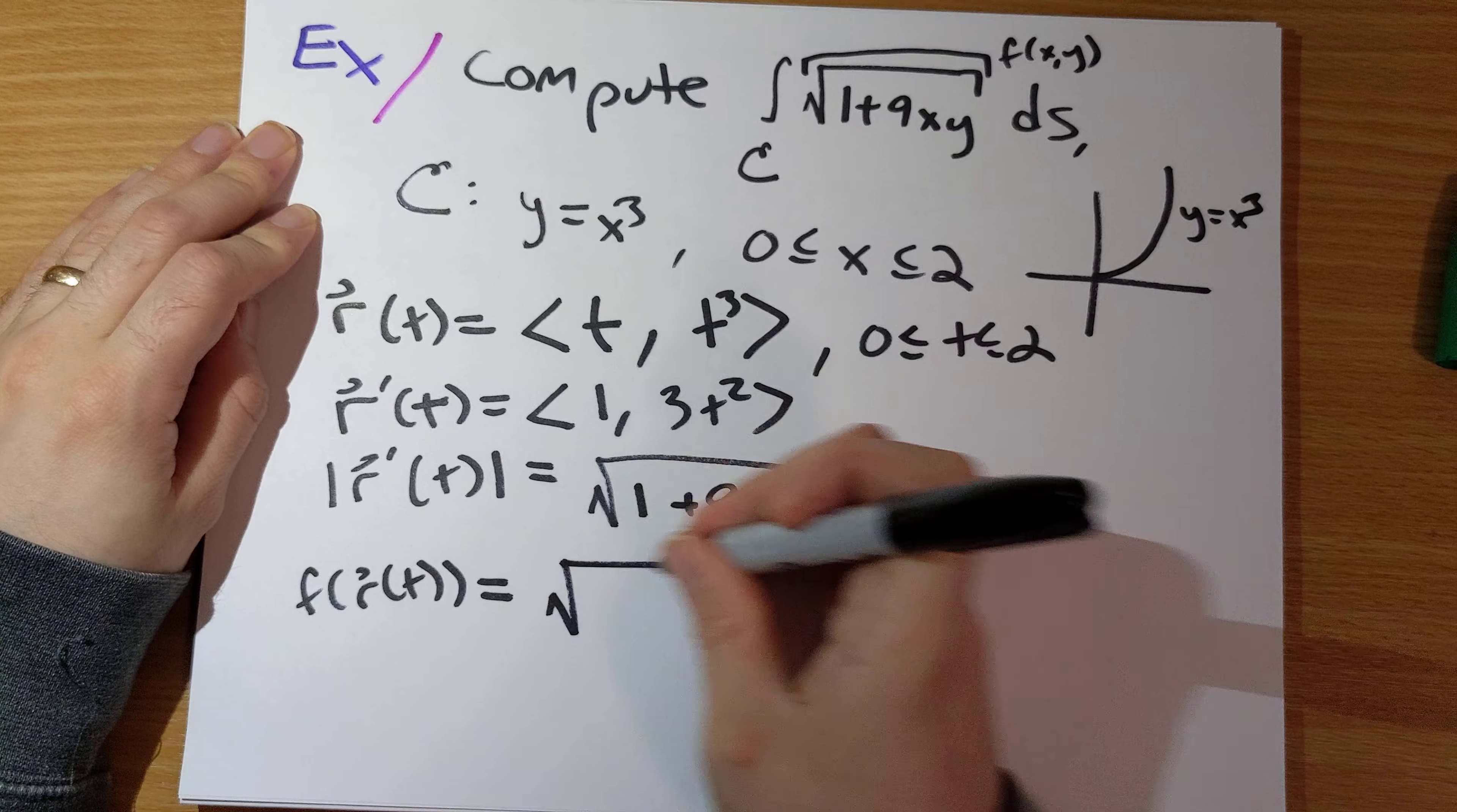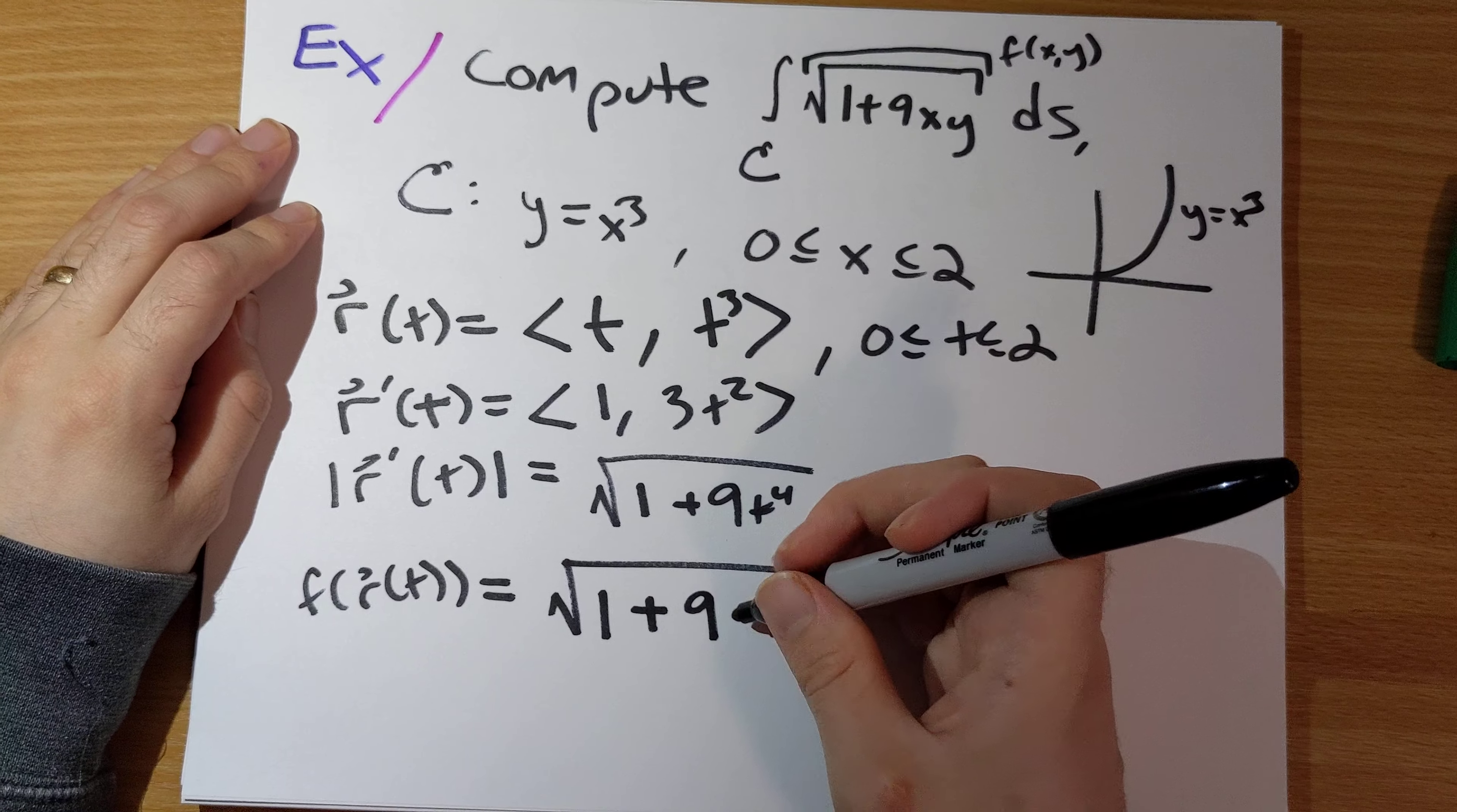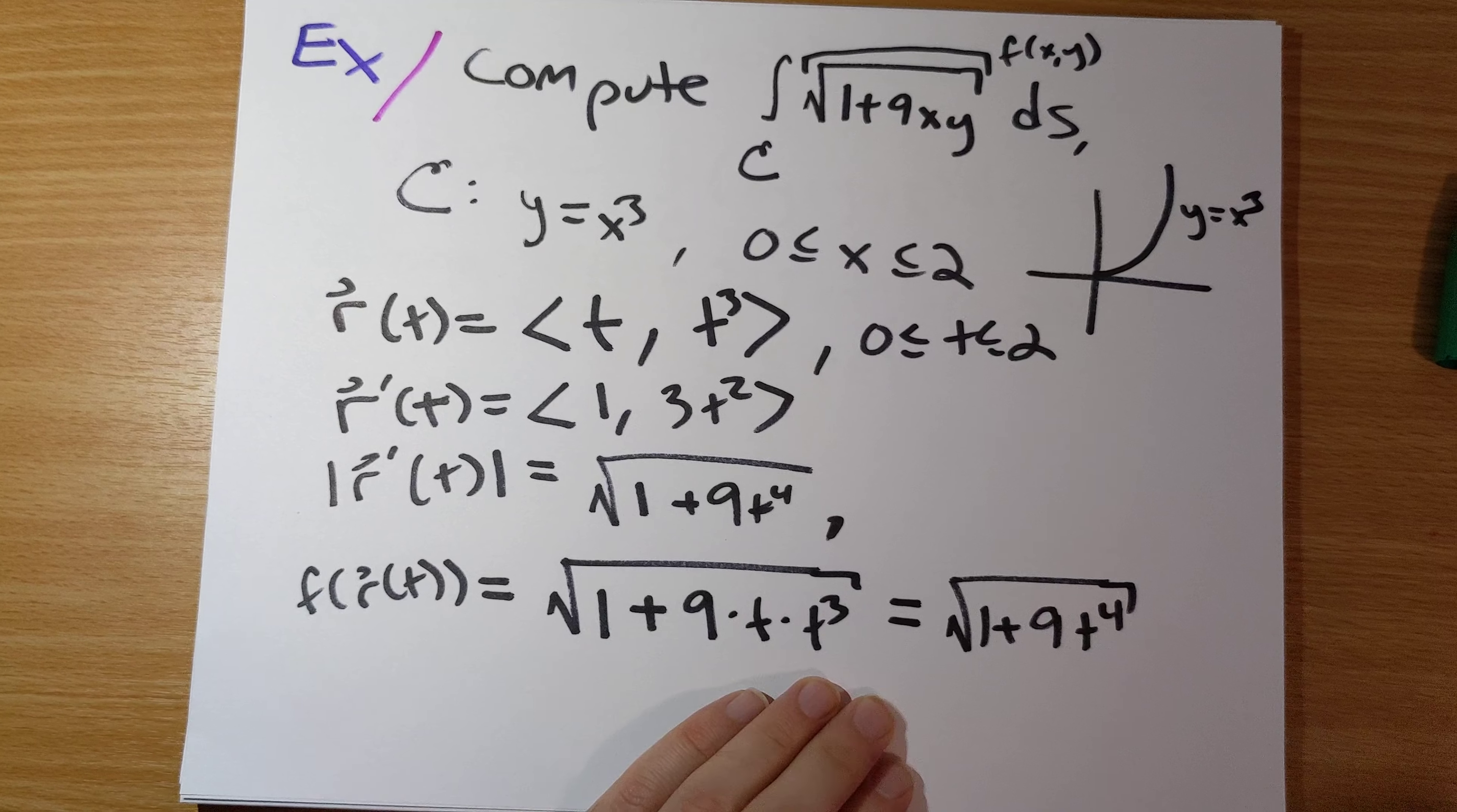And then we know this right here is our f of xy. So f of r of t is going to be square root of 1 plus 9 times x, x here is t,